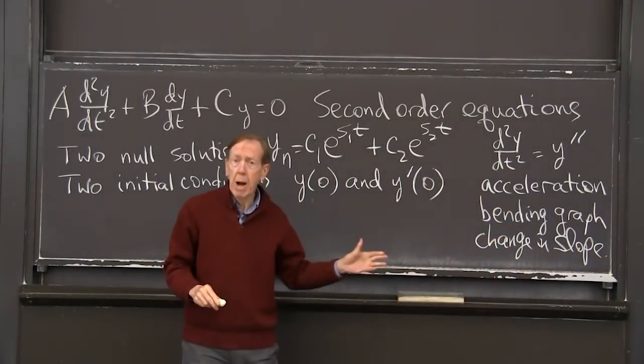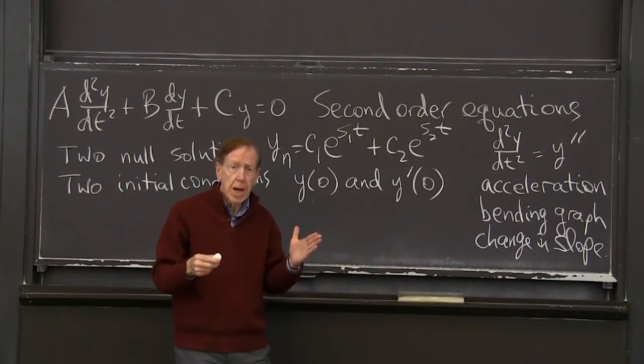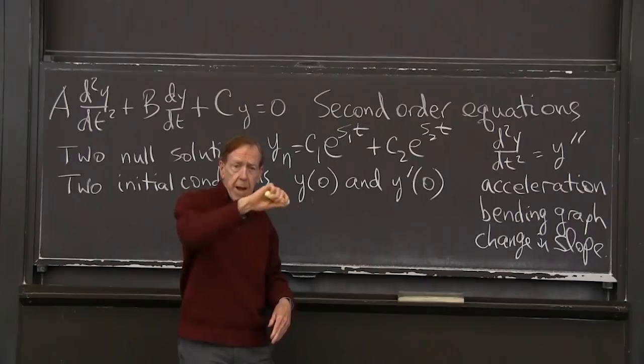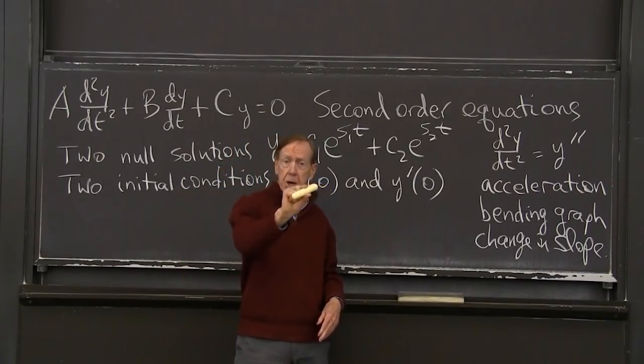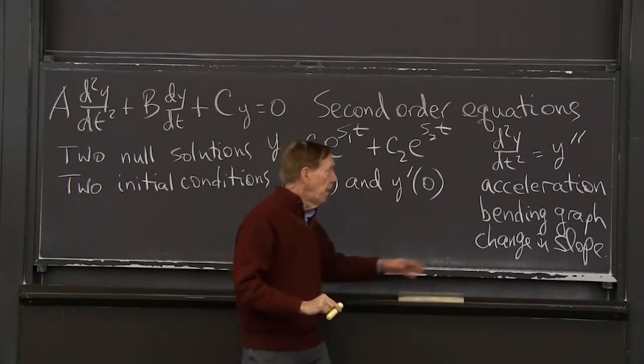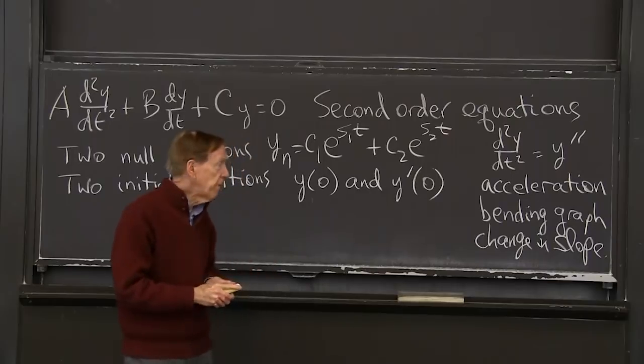And the slope is y prime, the first derivative. So to measure changes in y prime, which will bend the graph, my chalk would be a tangent line. As that changes, that gives us y double prime, a second derivative.